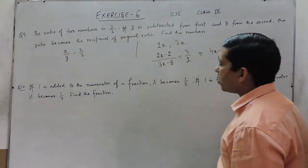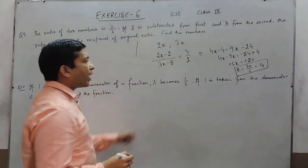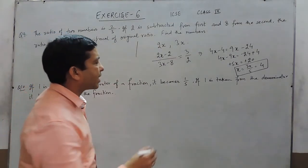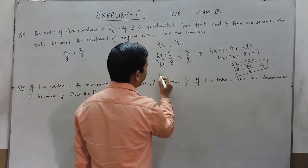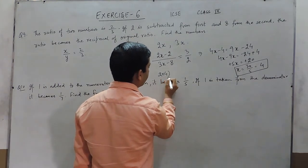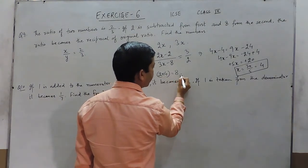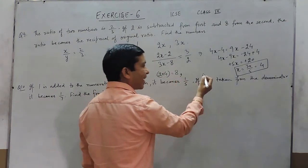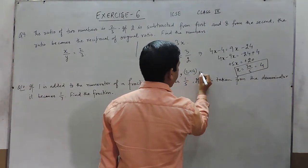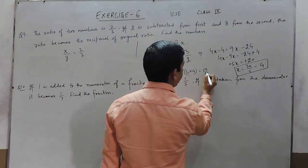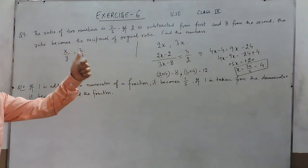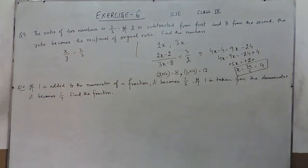If the value of x is 4, we already know that the two numbers are 2x and 3x. That means the first number is 2 multiplied by 4, which is 8, and the second number is 3 multiplied by 4, which is 12. This is one way where we have taken only one variable.